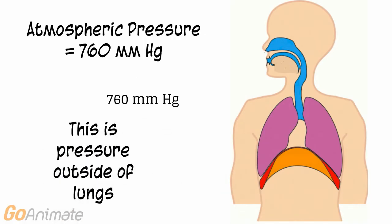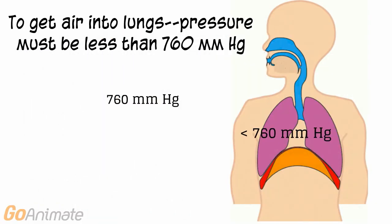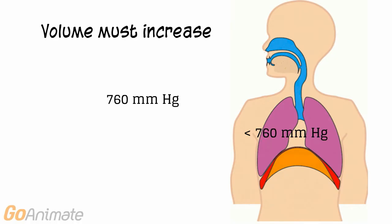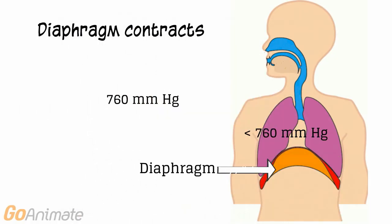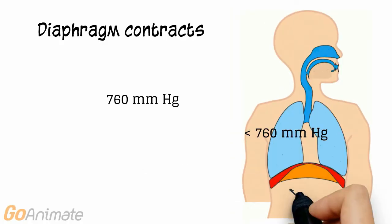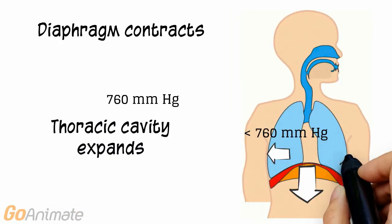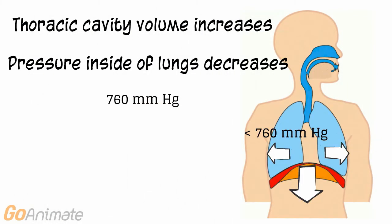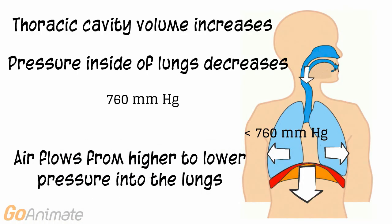The outside pressure, or atmospheric pressure, is at 760 mmHg. This is the pressure outside of the lungs. The pressure drops when lung volume increases. This happens when the diaphragm contracts, expanding the thoracic cavity. Because the thoracic cavity volume increases, the pressure inside of the lungs decreases. Air then follows a pressure gradient and moves from higher to lower pressure.